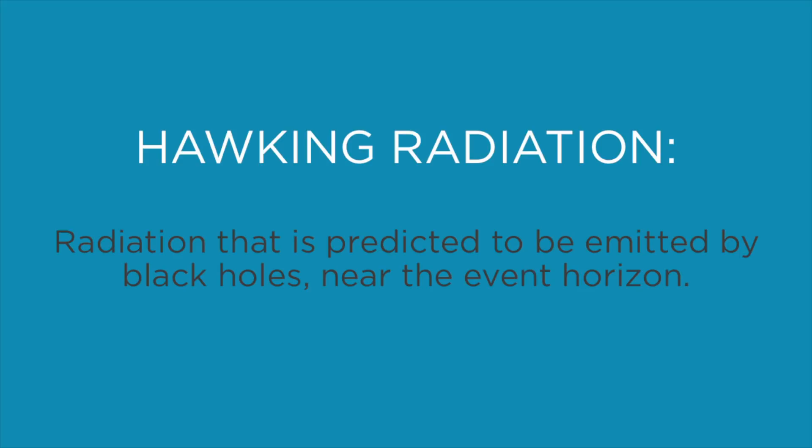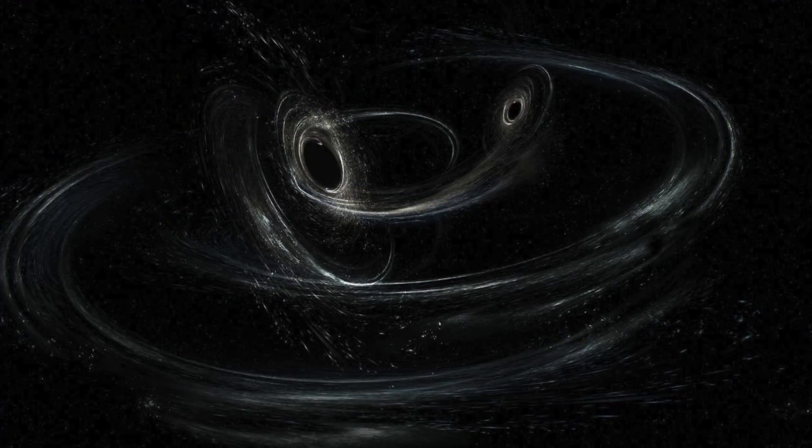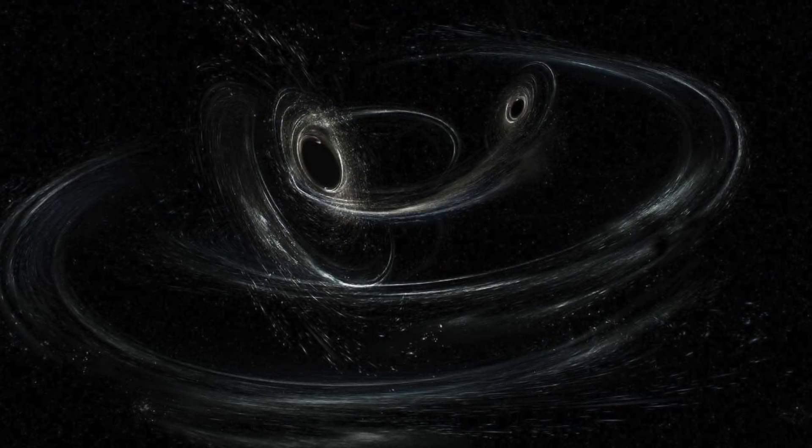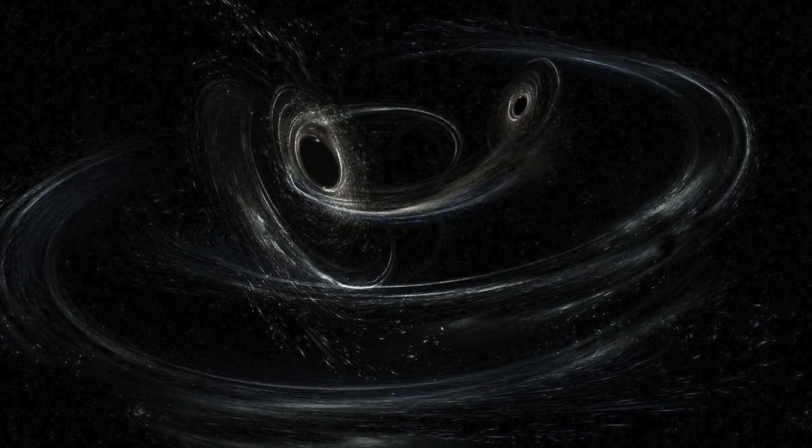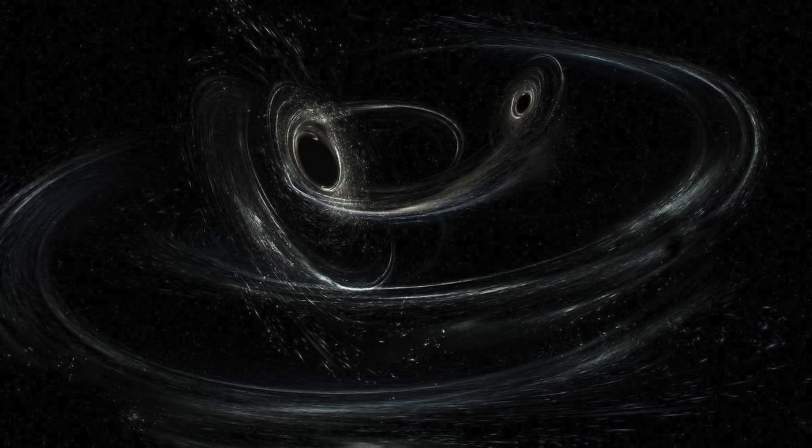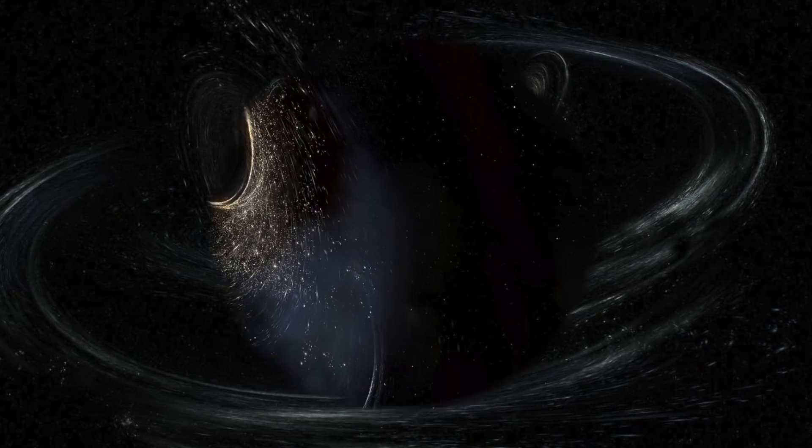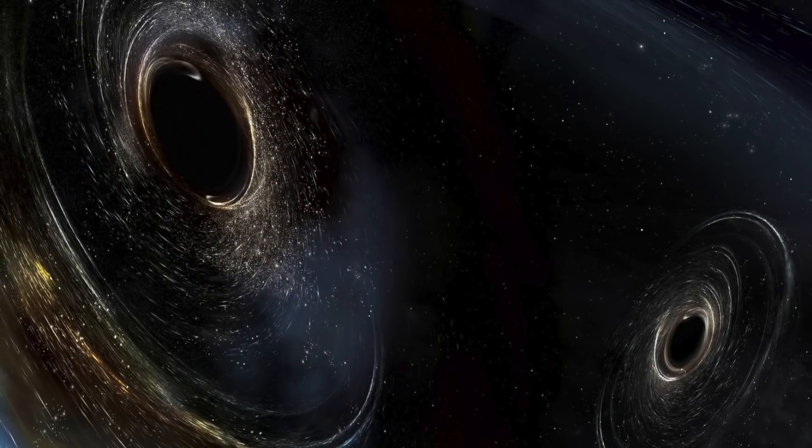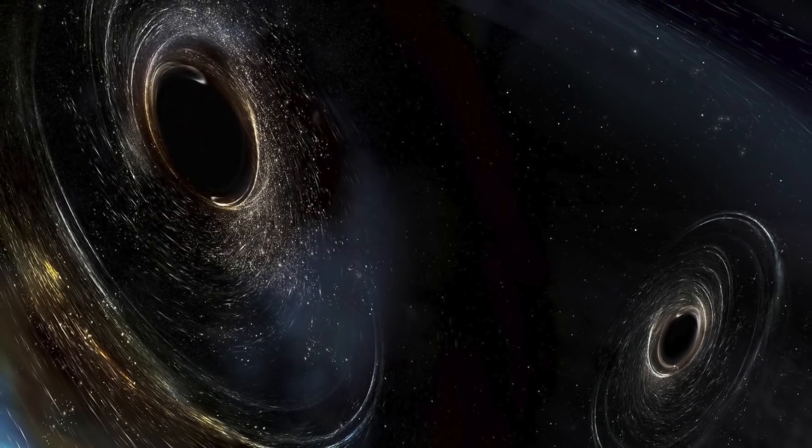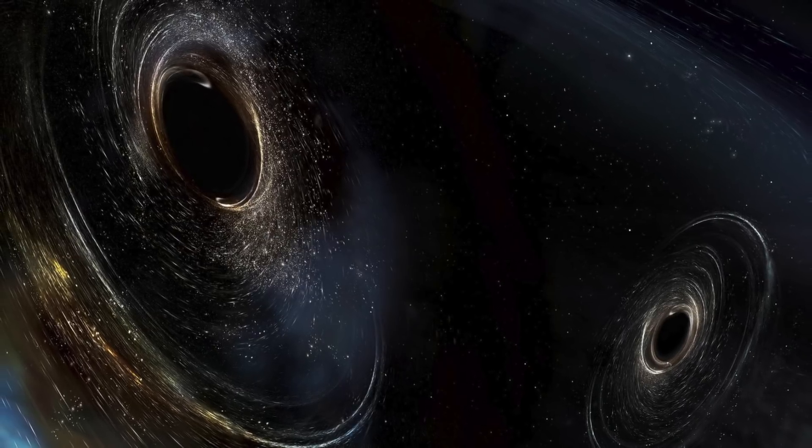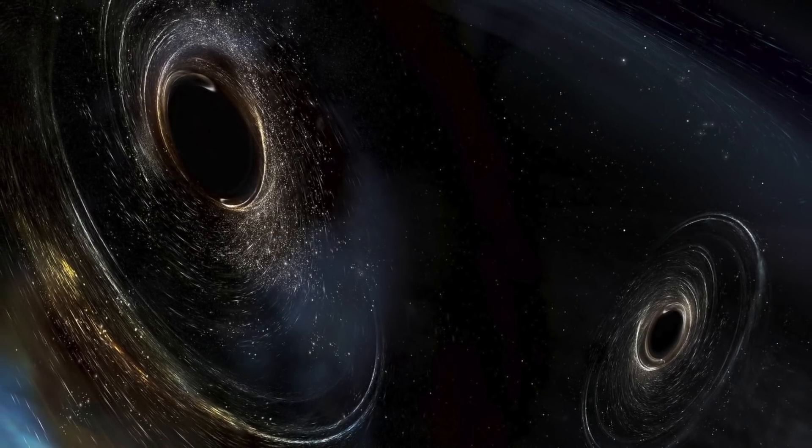By these virtual particles popping into existence at the event horizon, the black hole will eventually evaporate into nothing but after an extremely long time. So it turns out all we need to do to defeat a black hole is to wait it out. And as we discussed in the last video, there aren't any ways to kill a black hole apart from waiting eons for Hawking radiation to do its thing.